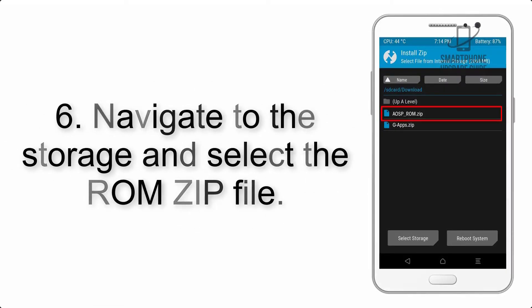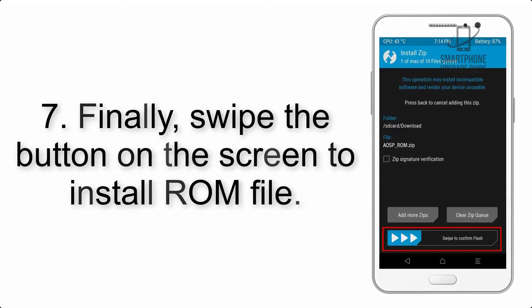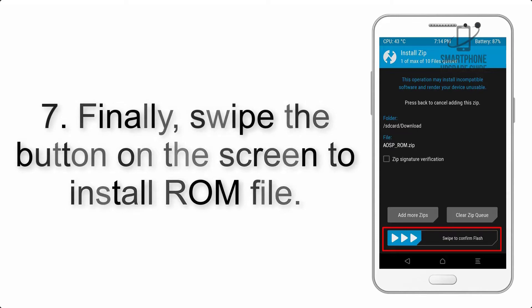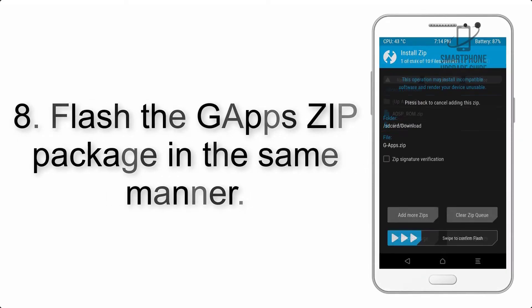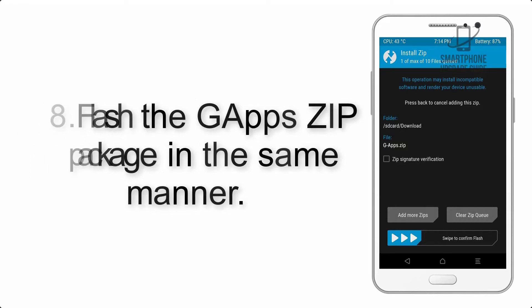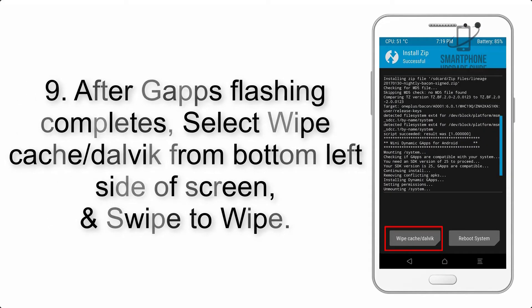Step 5: Go back to the recovery main screen and tap on the Install button. Step 6: Navigate to the storage and select the ROM zip file. Step 7: Swipe the button on the screen to install the ROM file. Step 8: Flash the GApps zip package in the same manner.